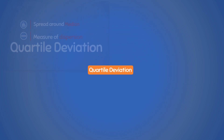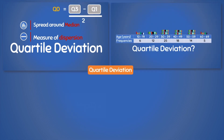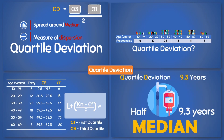So, to recap: the quartile deviation, or semi-interquartile range, is a measure of dispersion that quantifies the spread of data around the median. We had data on ages of patients admitted to a hospital within the last week and found the quartile deviation by completing the table with boundaries and cumulative frequencies, then calculated Q1 and Q3 using the quartile formula. We arrived at a quartile deviation of 9.3 years, meaning 50% of patients have ages within 9.3 years of the median. Now we know how to compute the quartile deviation for grouped data.